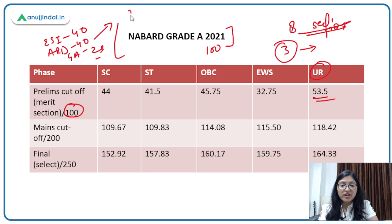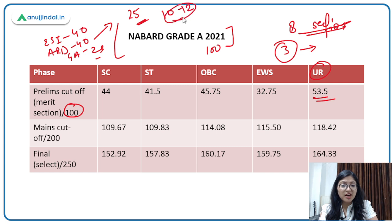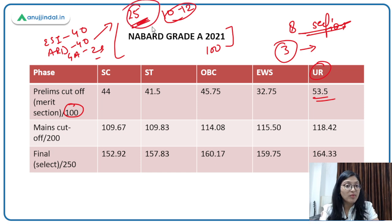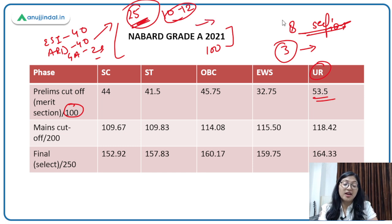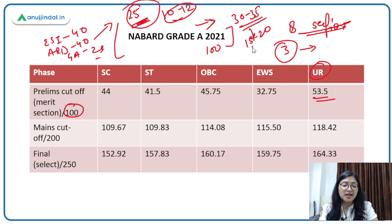For example, if you target 25 marks in ARD, you can easily cover 10 to 12 marks. For students who are not from an agriculture background, that will work wonders. Those who are comfortable with ARD can target 30 to 35 marks in ARD, then 15 to 20 marks in ESI, and 5 to 10 marks in General Awareness.